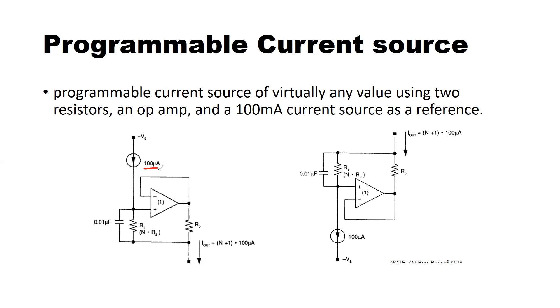I will show you we can design a programmable current source using two resistors R1 and R2, one operational amplifier, and a 100 microampere current source as a reference.